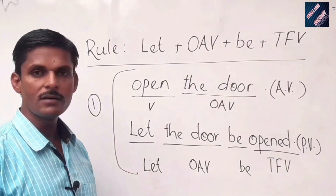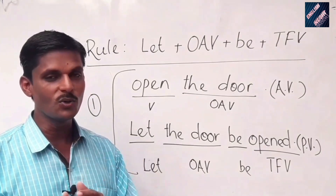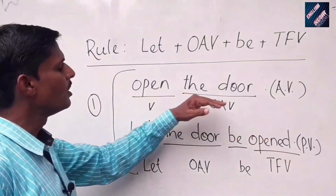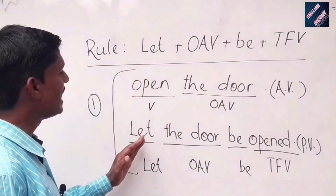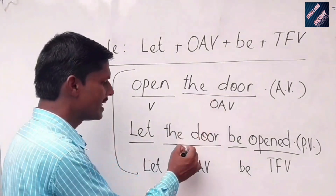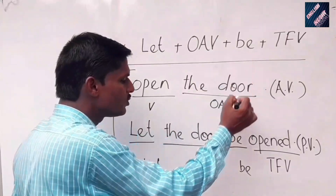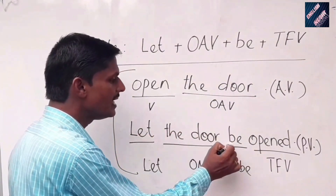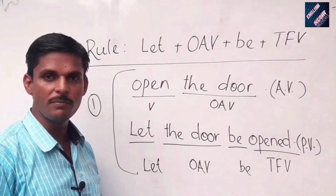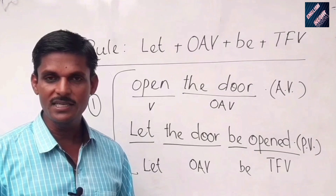Sentence number one is 'Open the door.' 'The door' is the object and 'open' is the verb. According to the rule: first use 'let,' then 'the door' as the OAV, then 'be,' and finally 'opened' — the third form of the verb. So the active voice is 'Open the door' and the passive voice is 'Let the door be opened.'